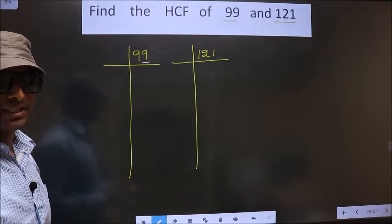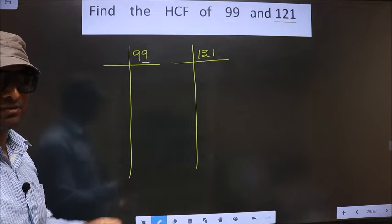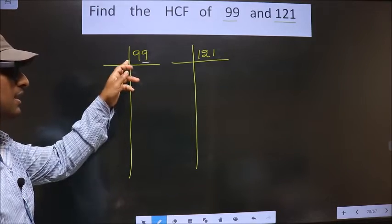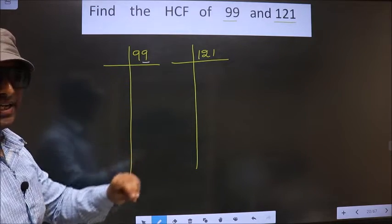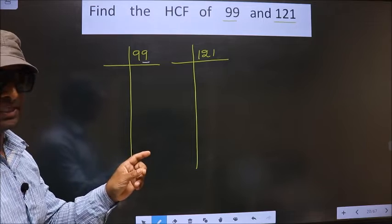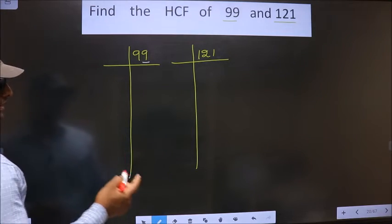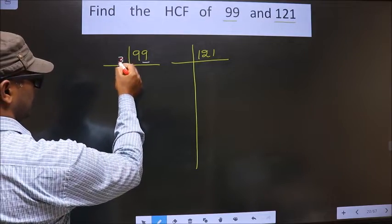Next, prime number 3. To check divisibility by 3, we should add the digits. That is 9 plus 9, we get 18. Is 18 divisible by 3? Yes. So this number is also divisible by 3, so we take 3 here.